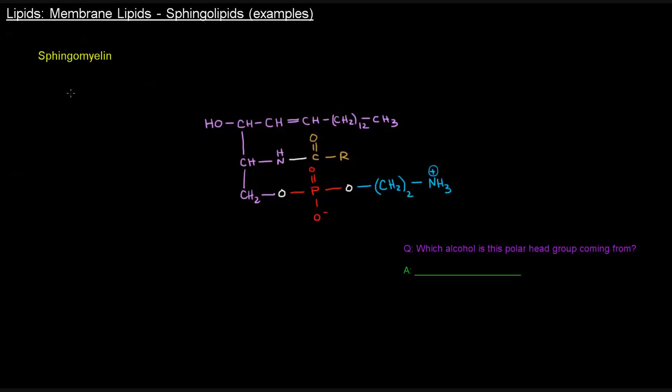The first one we'll talk about is a sphingomyelin. Sphingomyelins are basically phosphosphingolipids that specifically have phosphocholine or phosphoethanolamine as their polar head group. This sphingomyelin has a sphingosine backbone in purple, a fatty acyl group here in brown, and then the polar head group is a phosphoalcohol.